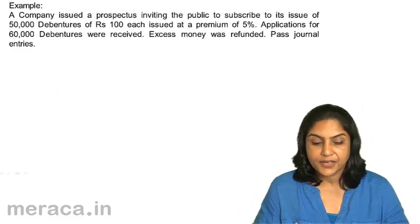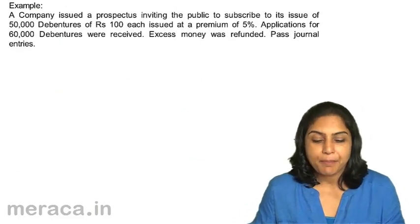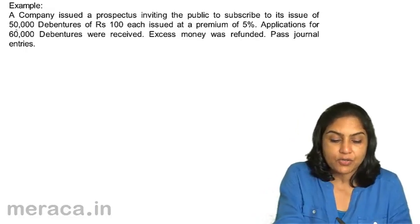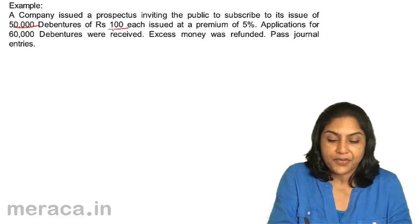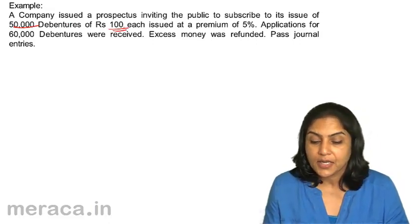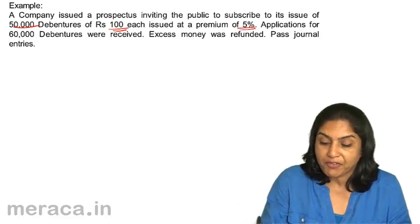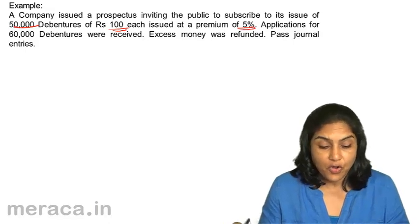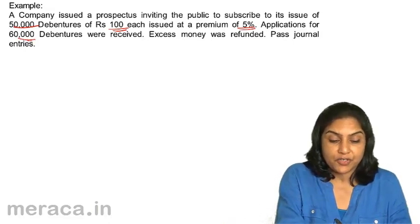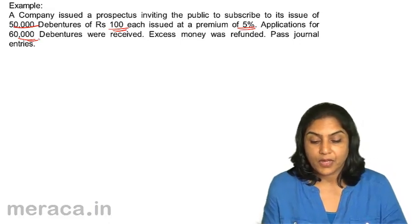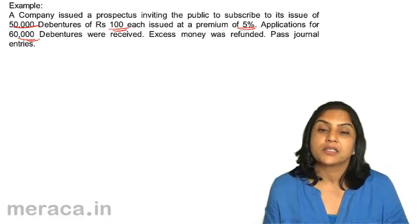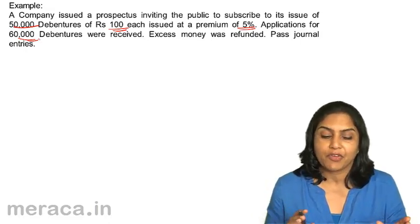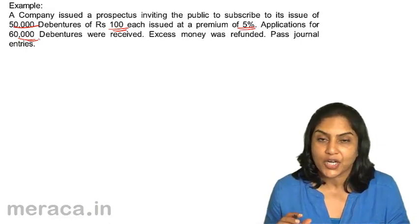Let us consider another example. A company issued a prospectus inviting the public to subscribe to its issue of 50,000 debentures of Rs.100 each, so we are talking of 50 lakhs. They were issued at a premium of 5%. Applications for 60,000 debentures were received. Excess money was refunded. When we receive money, we put it in the debenture application account.